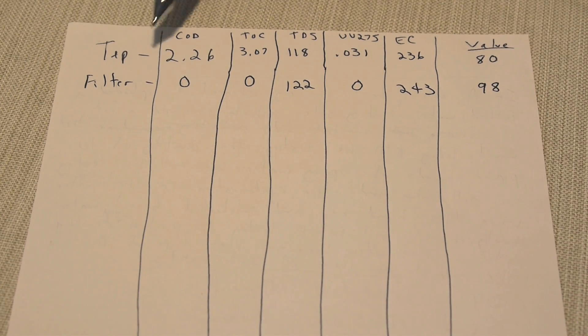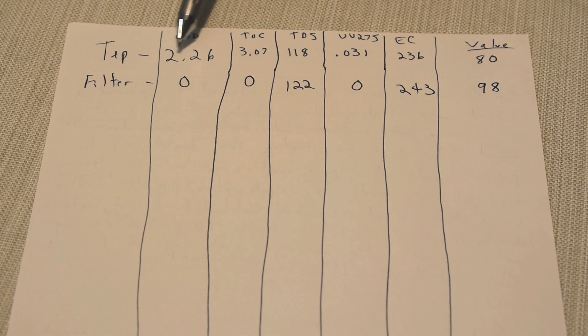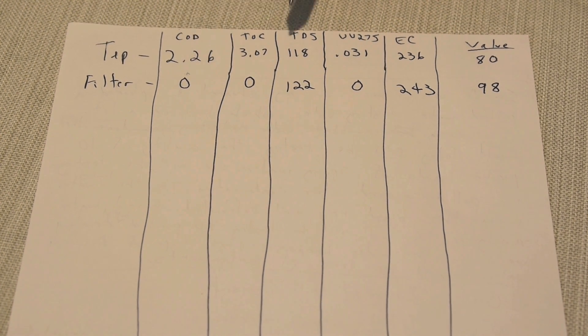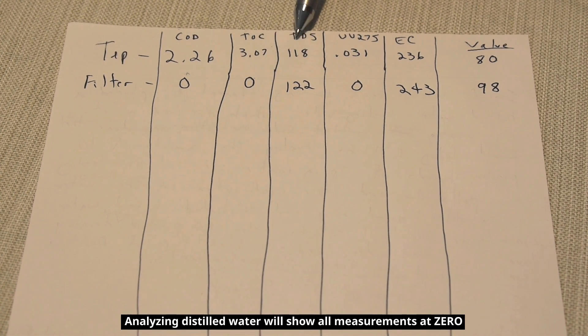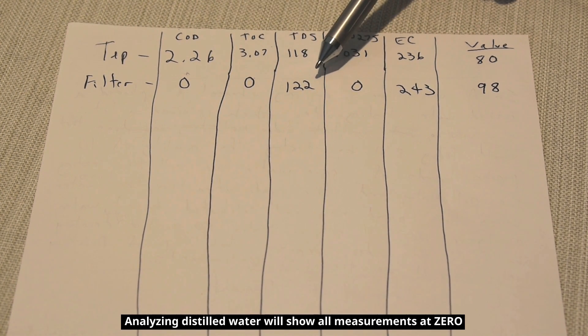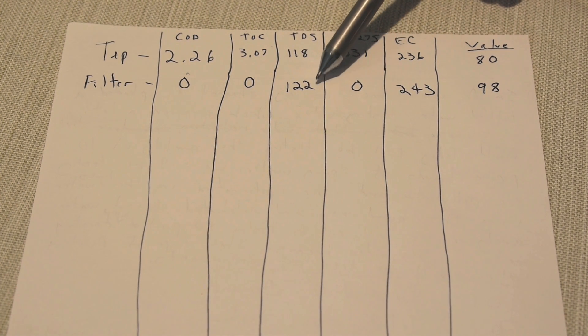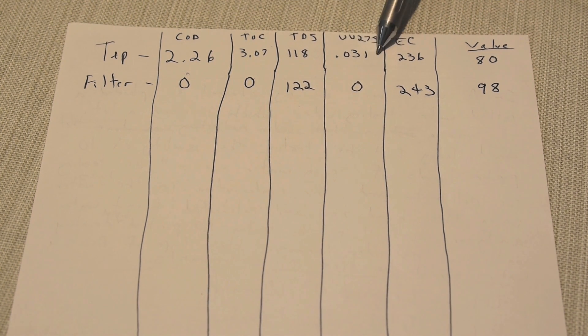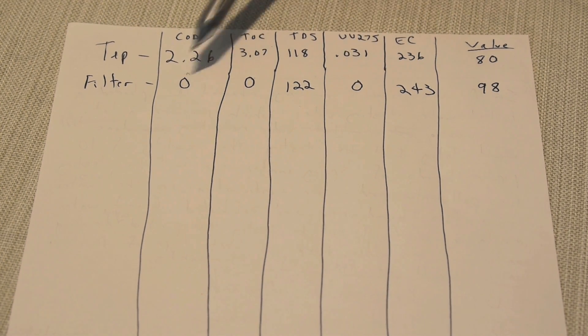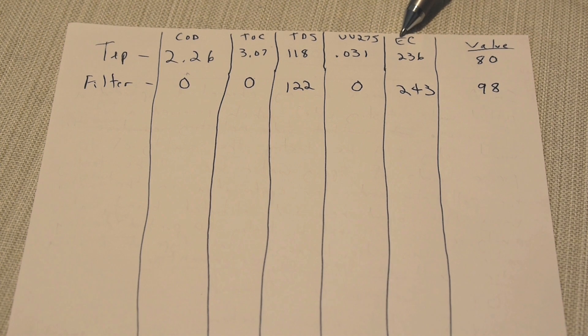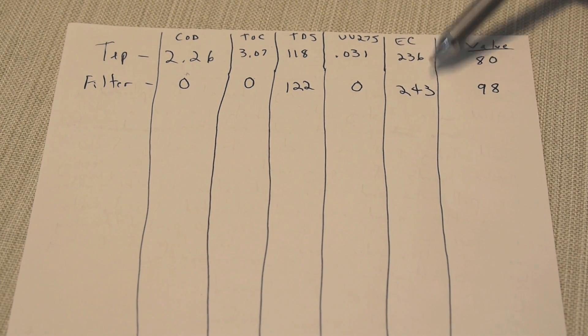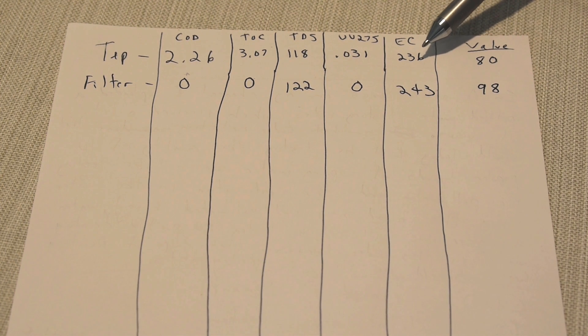All right, so you can see right over here my city water, tap water. COD was 2.26, down to zero using the GE filter from Home Depot. TOC 3.07 down to zero, excellent. TDS slightly higher. Maybe it's some of the activated carbon inside the carbon block that maybe fell off, and that's why it went up slightly. UV-275 was 0.031, down to zero. So everything that matters is now zero. And electrical conductivity right about the same. Could be an indication of maybe some salt in the water. Value was 80 for the city water and 98 now for my filtered.